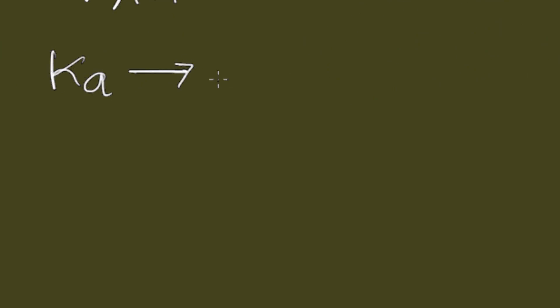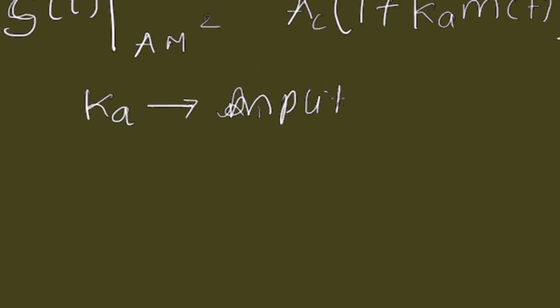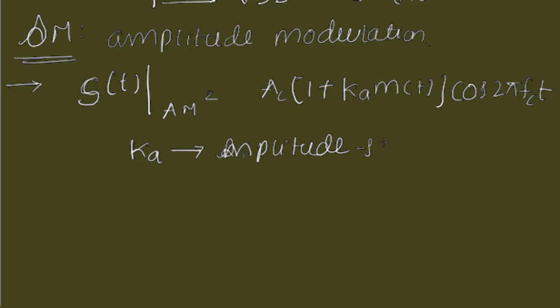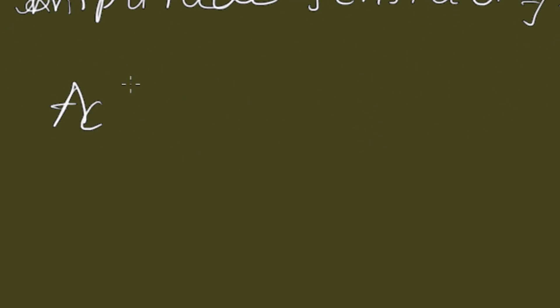Here, KA is called amplitude sensitivity factor. This is called amplitude sensitivity. We know that, as this is the carrier wave, and the amplitude of the present signal is Ac into 1 plus KA M(t). This amplitude depends upon the message signal M(t). So, it is called amplitude modulation.